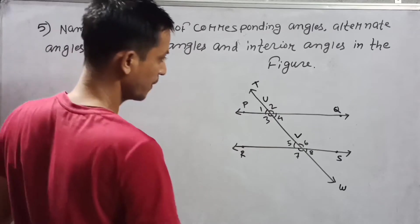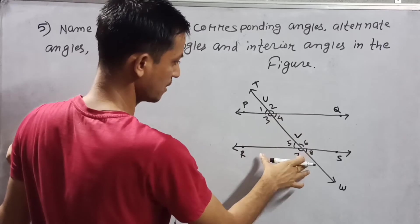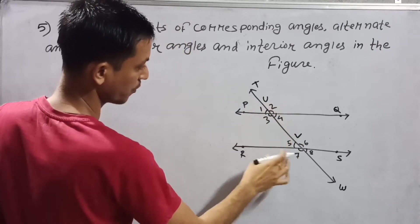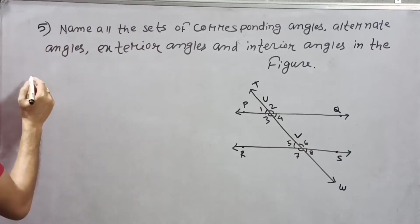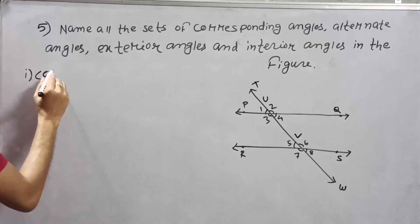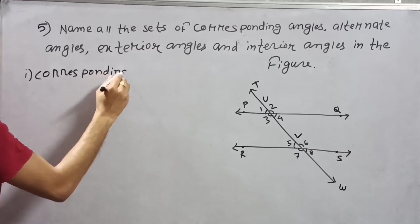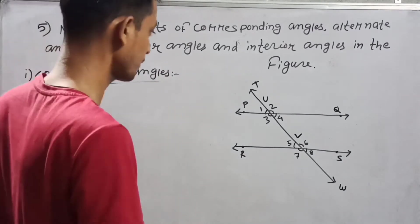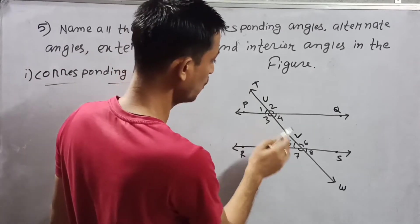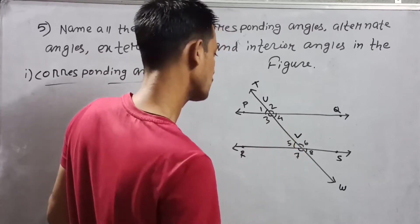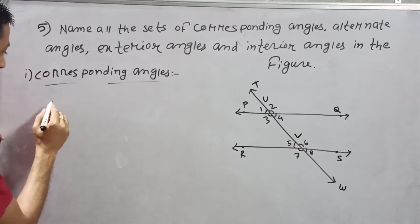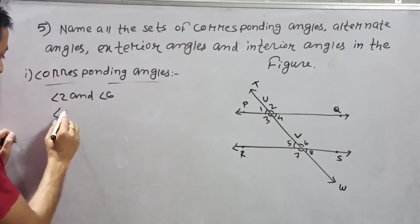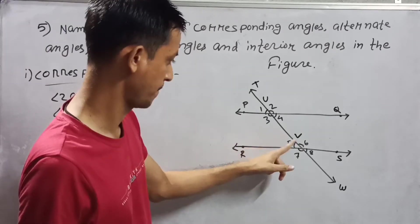Here you can see one figure — PQ is one line, RS is one line, so two parallel lines with one transversal TW. You can see four angles: 1, 2, 3, 4 at one intersection and 5, 6, 7, 8 at the other. Corresponding angles: 2 and 6, 1 and 5, 4 and 8, 3 and 7.